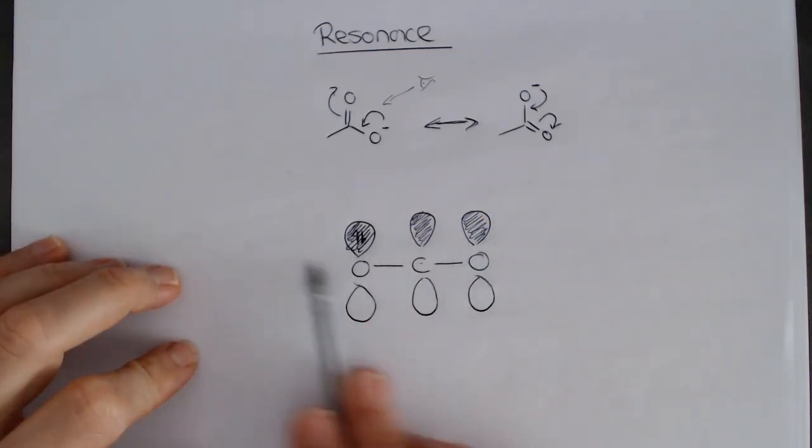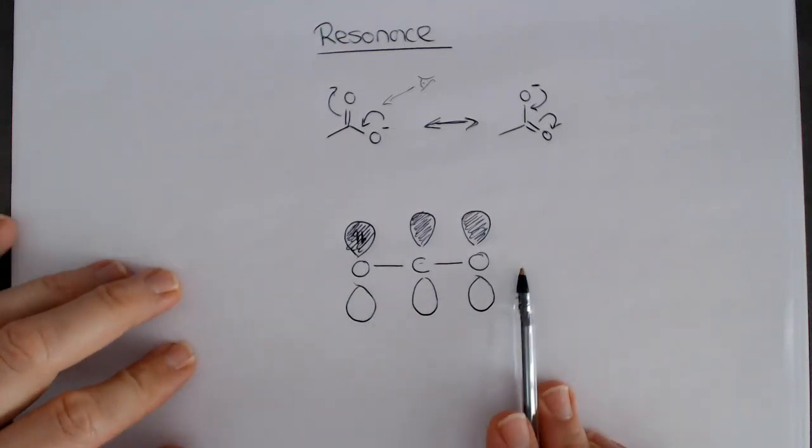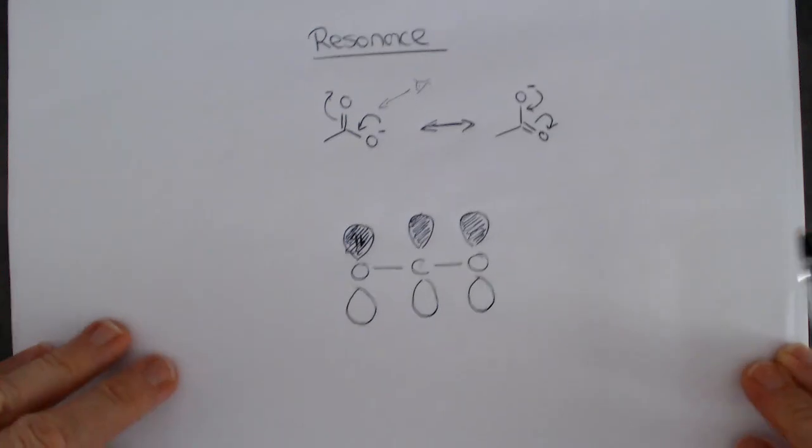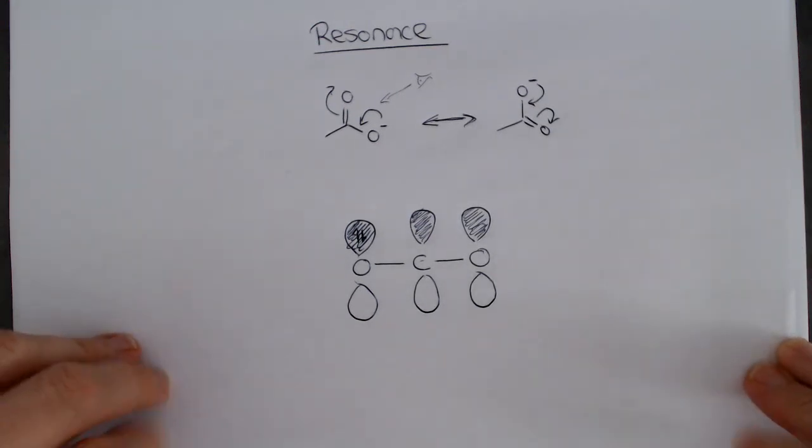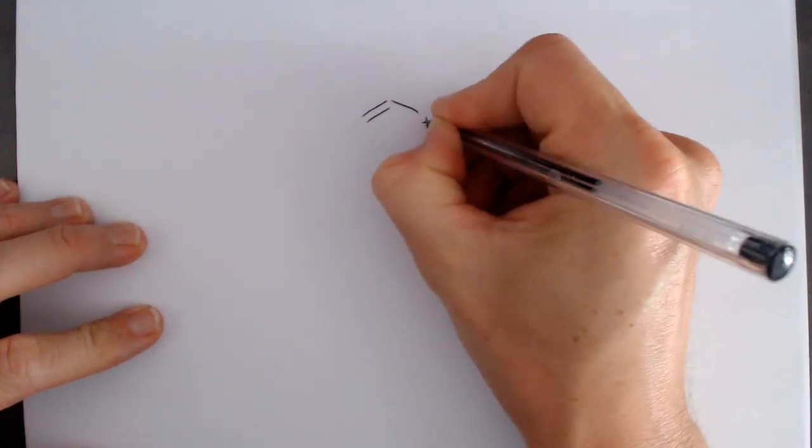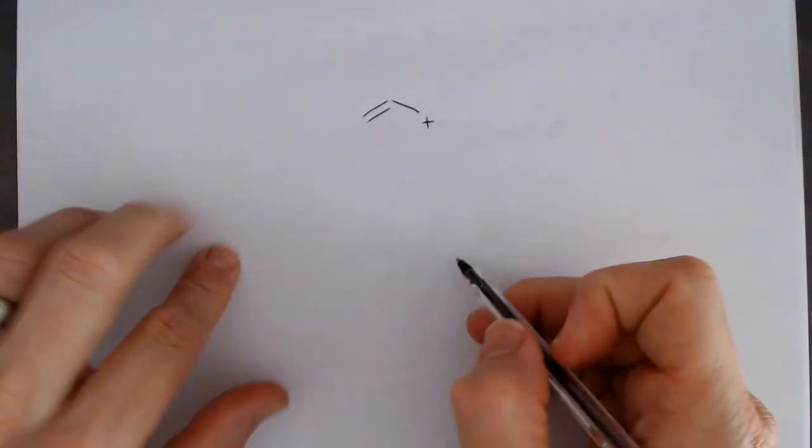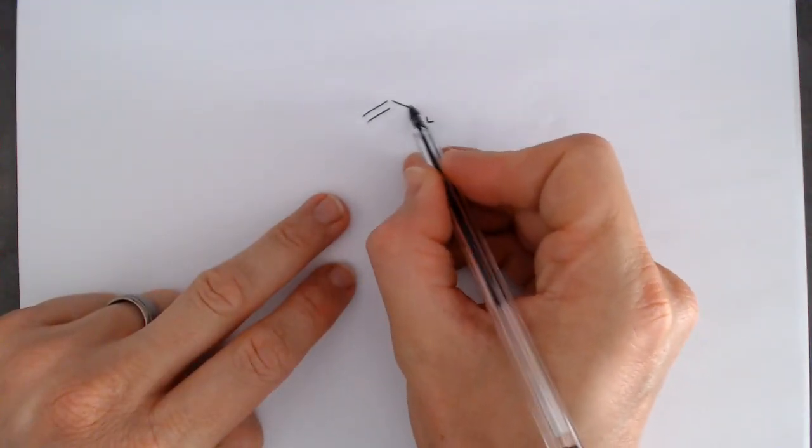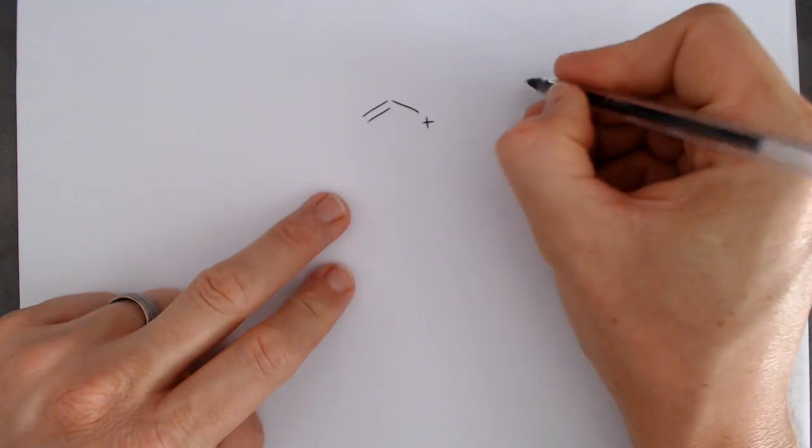We can do a very similar example, just to stress this importance, by looking at an important intermediate, and that is an allyl cation. So I've just used some words here which you may not be familiar with.